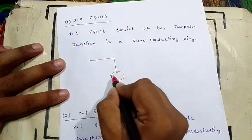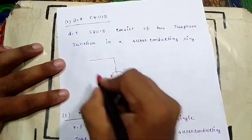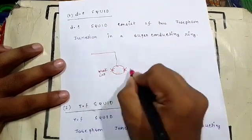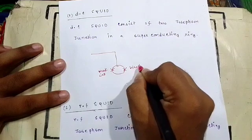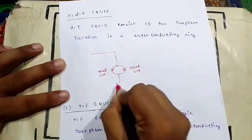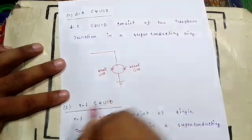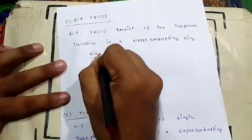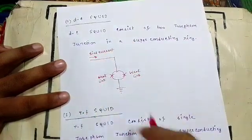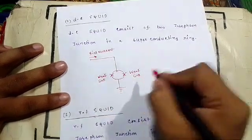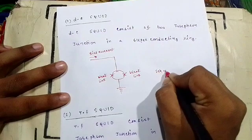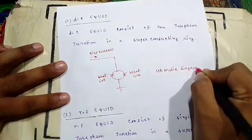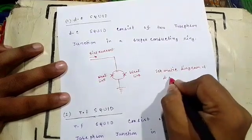We have two weak links present in the diagram. This is one weak link, and this will also be a weak link. This will be grounded, and this is the bias current — bias current flows in this direction. This is the schematic diagram of DC SQUID.